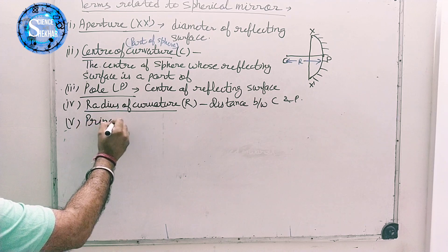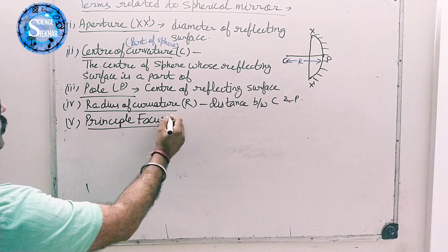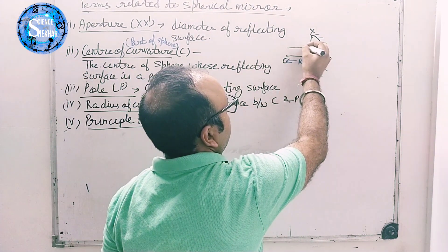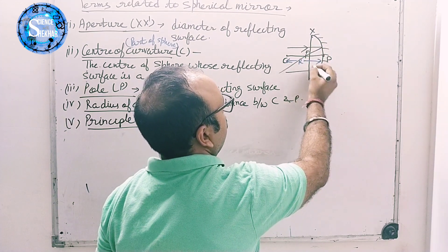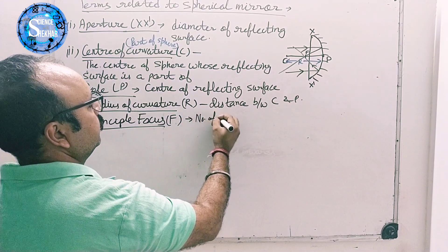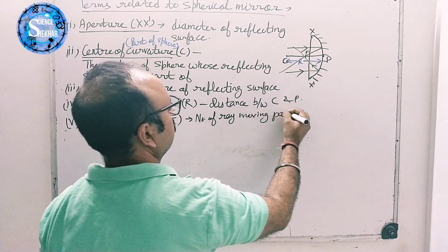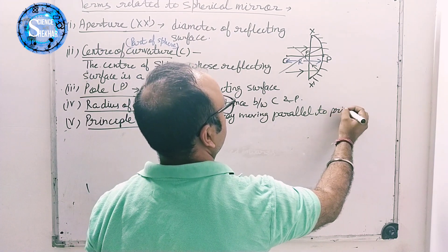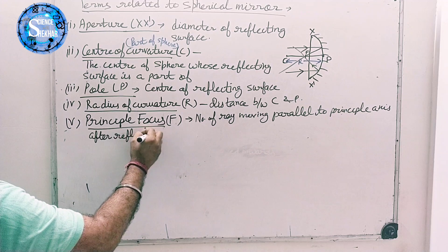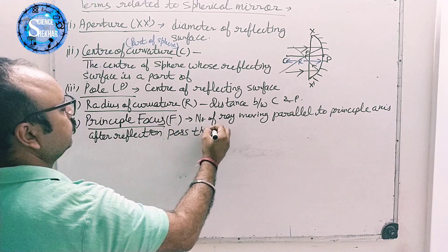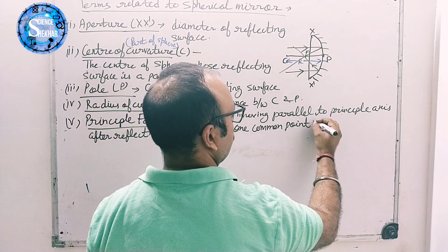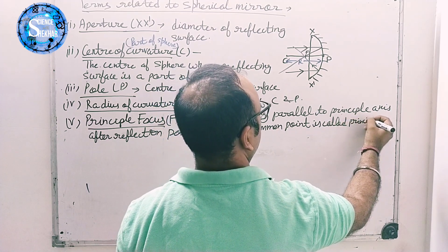The fifth term, which is very important, is principal focus, denoted by F. If any ray of light travels parallel to the principal axis and strikes the mirror, after reflection it always passes through one common point. That common point is called the principal focus. The number of rays moving parallel to the principal axis, after reflection, all pass through this one common point called the principal focus F.